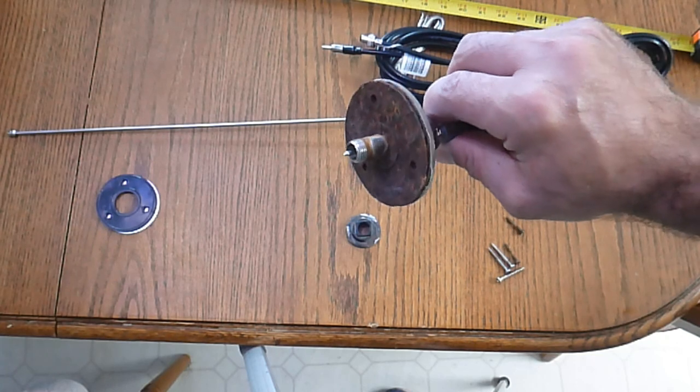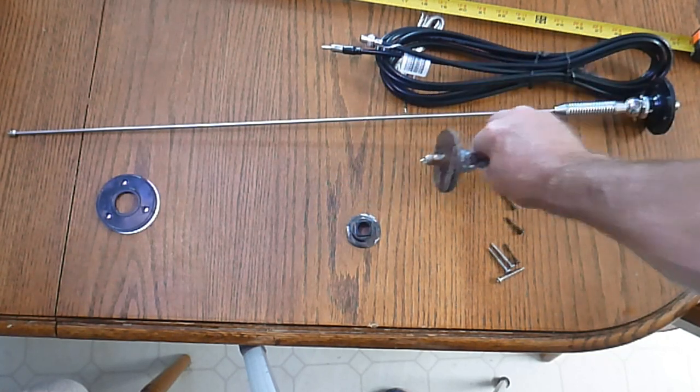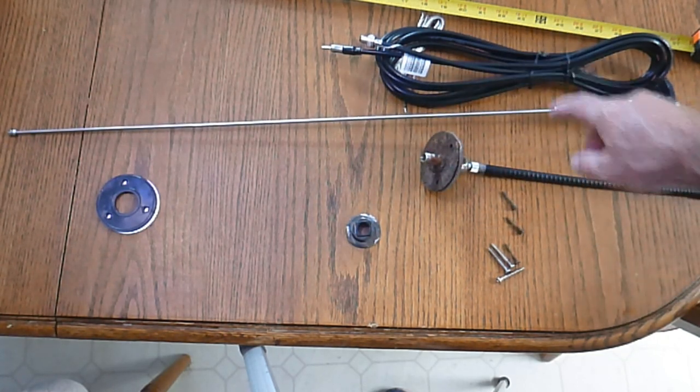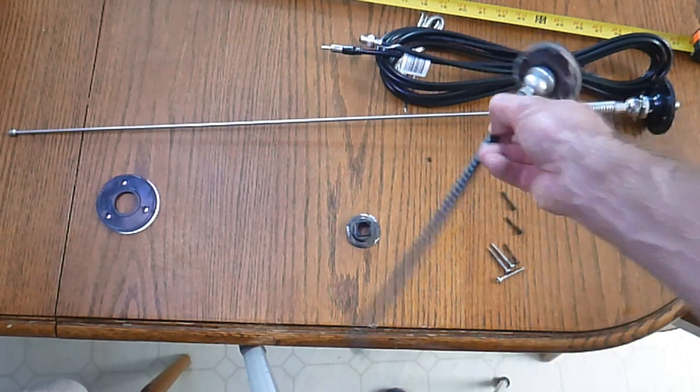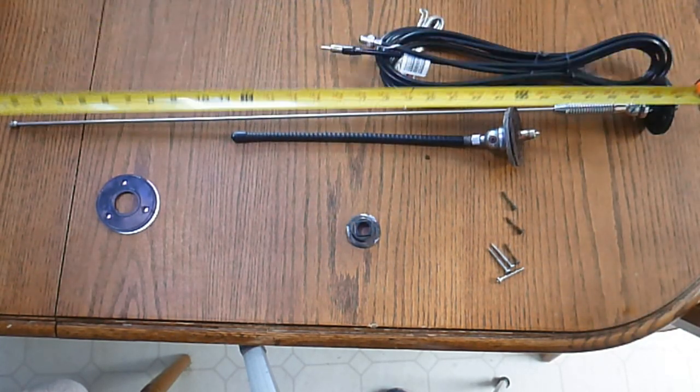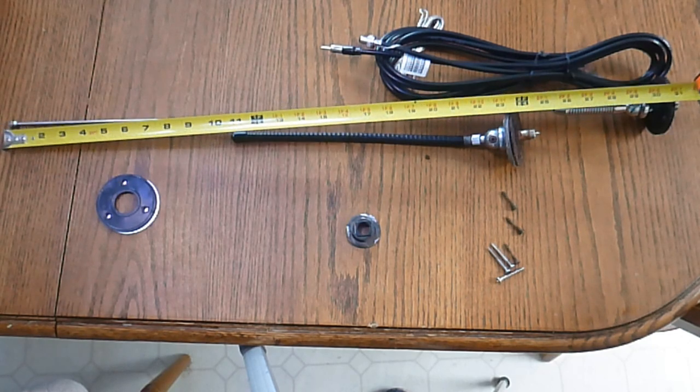So the existing cable screws onto our new antenna here, and if you notice, the new antenna is quite a bit longer—it clocks in at 31 inches overall length.